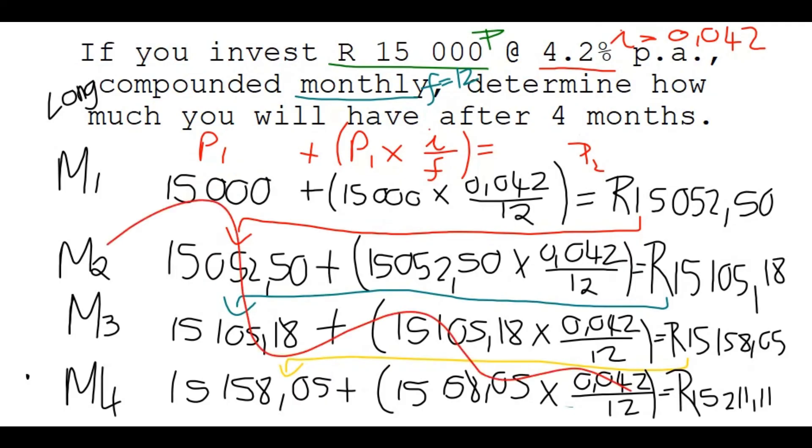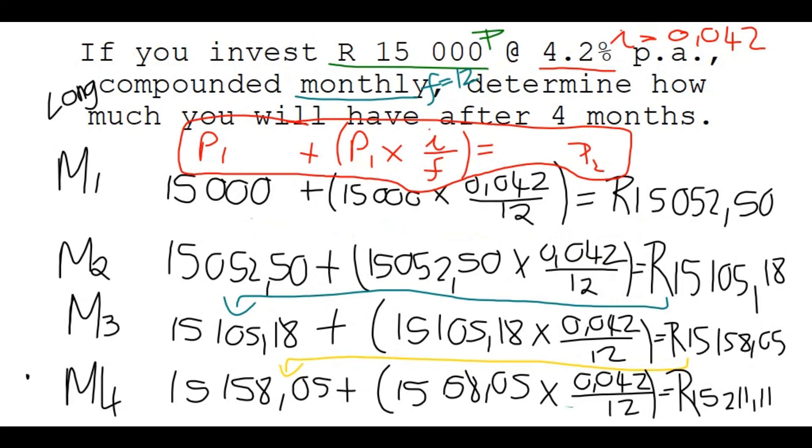So if you want to use like a formula for this long method, you say P1 plus P1 times the interest rate over the frequency, and that gives you your new amount.